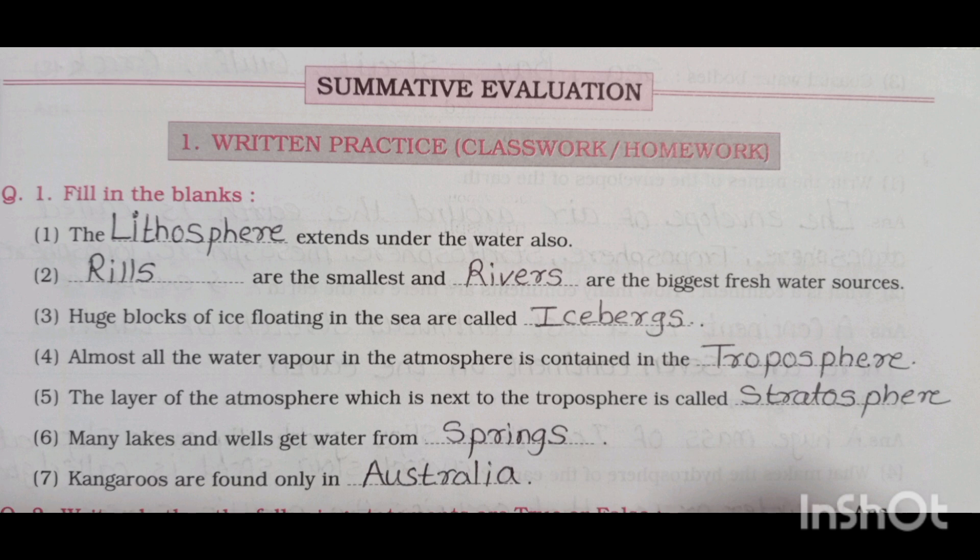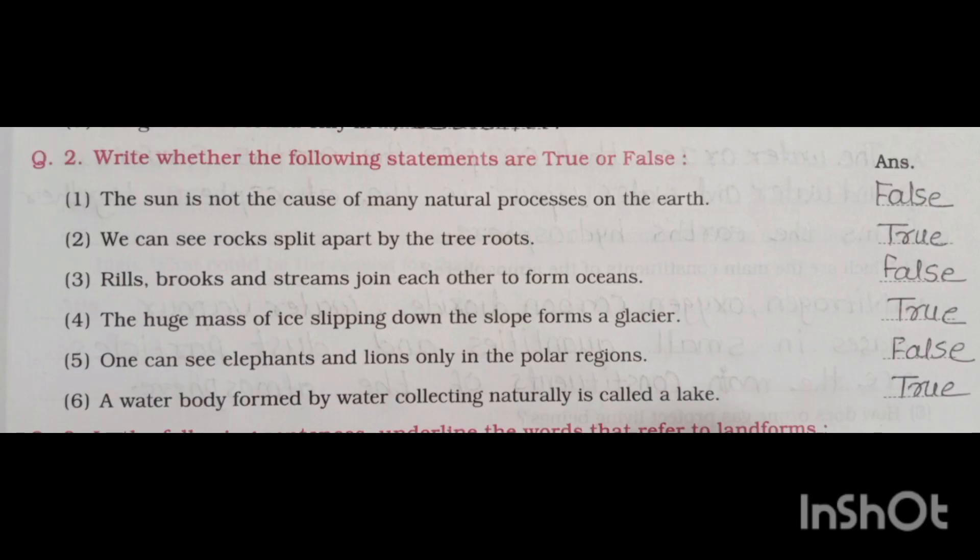Fifth, the layer of the atmosphere which is next to the troposphere is called the stratosphere. Sixth, many lakes and wells get water from springs. Seventh, kangaroos are found only in Australia.